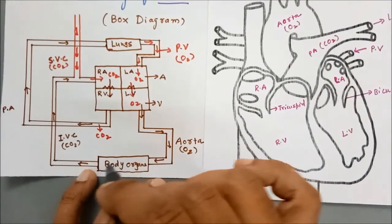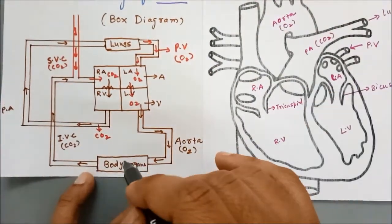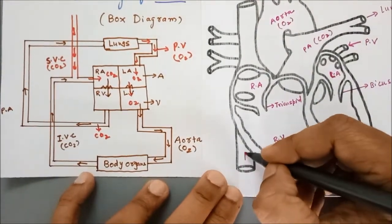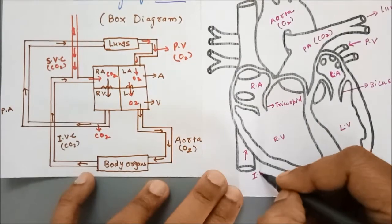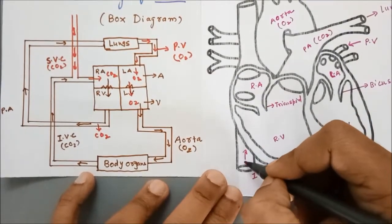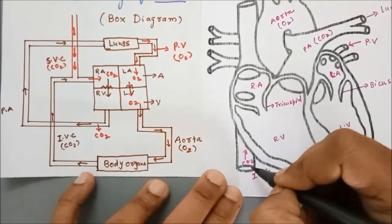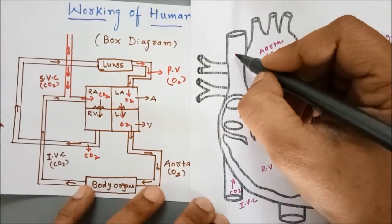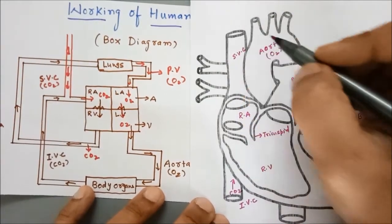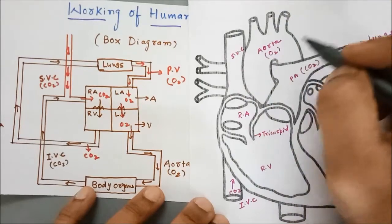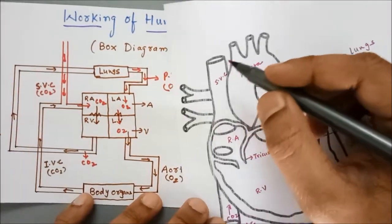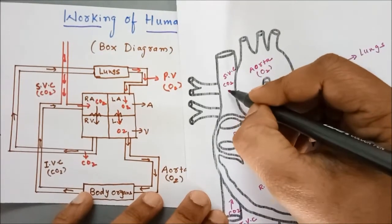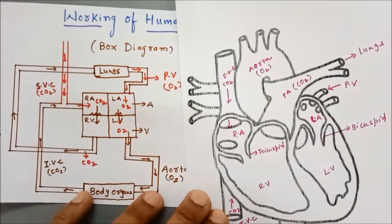These are the body organs located below the heart, and from there the inferior vena cava originates. This is the inferior vena cava — it brings the deoxygenated blood from the body organs and finally it enters the right atrium. In the same way, this is the superior vena cava, which collects deoxygenated blood from the upper body parts — the parts located above the heart — and it brings that carbon dioxide-containing blood to the right atrium.